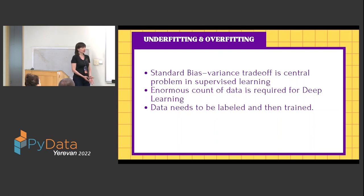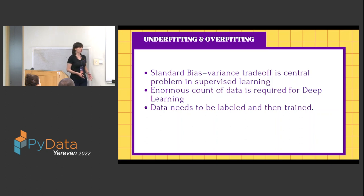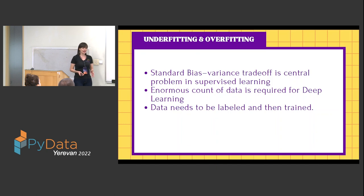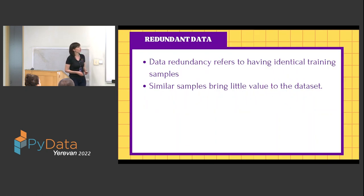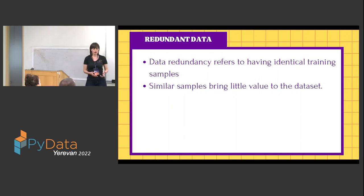With supervised learning, we need to label the data, clean it, augment it if needed, and then train. In the trade-off of variance and bias, this brings us to overfitting and underfitting.